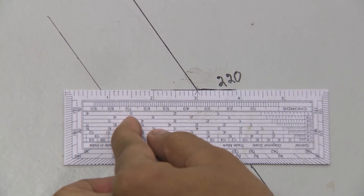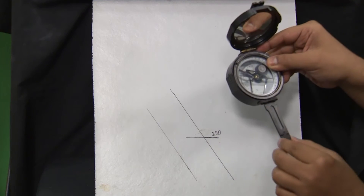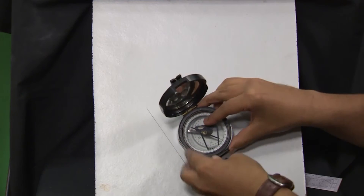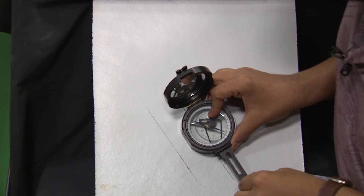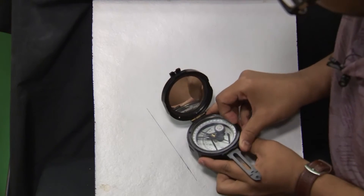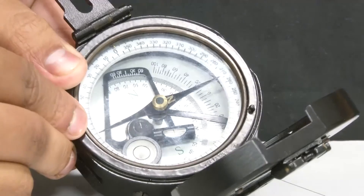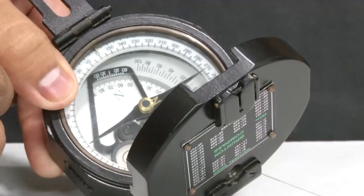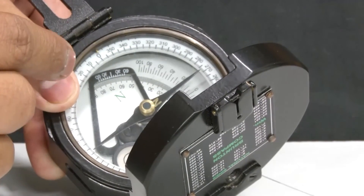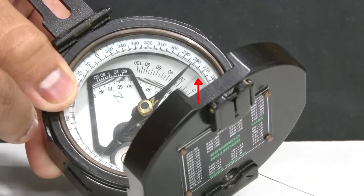We will now measure the plunge direction, or trend, of the lineation. The pointed arm of the compass is held parallel to the lineation, and using the see-through arm we confirm the pointed arm is parallel to the lineation. From this position, we rotate the Brunton compass into a horizontal position while keeping the pointed arm parallel to the lineation, until the bubble in the circular level comes to the center. The reading — the value of the northern end of the magnetic needle on the 360-degree graduated scale — comes out to be approximately 270 degrees.